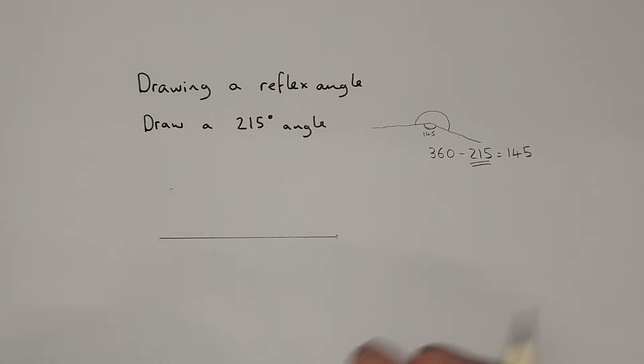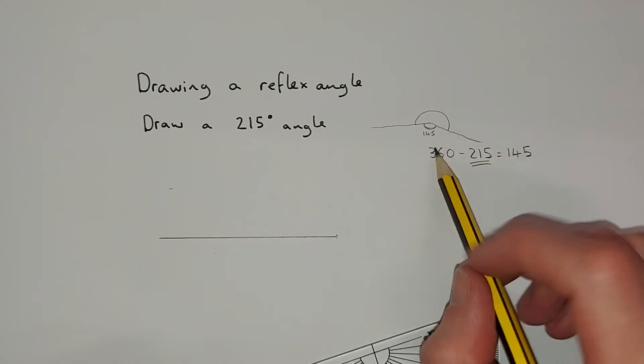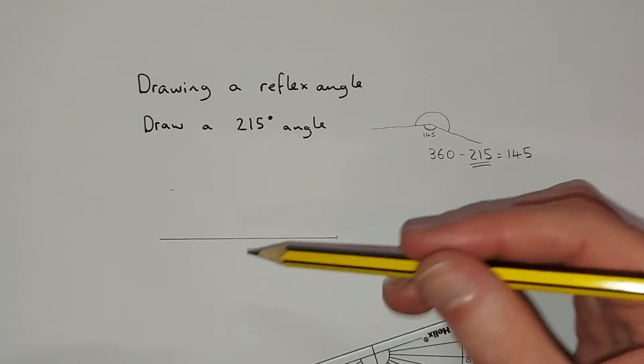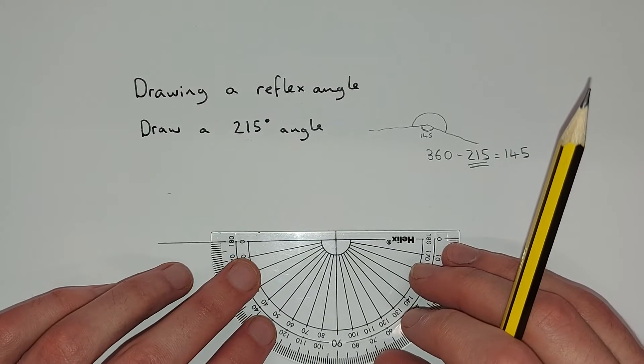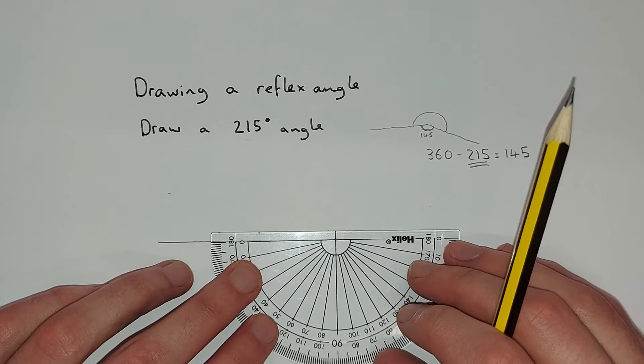Then we're going to line up our protractor. I'm going to do it so it looks like this. So I'm going to do my 145 degree angle coming this way. So let's line that up like so.